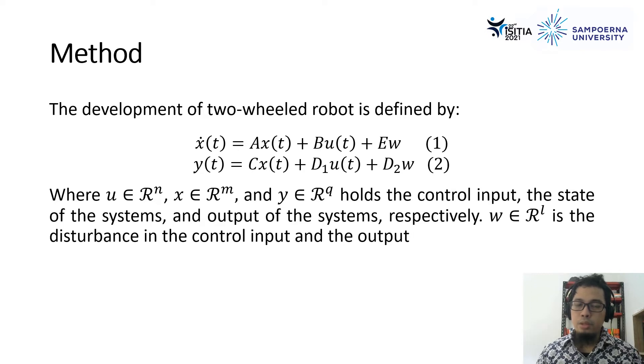we need to define the mathematical model of two-wheeled mobile robots, which is represented by equations one and equations two. Here, we introduce U as the element of R^n and X, R^m and Y is in R^q, holds the control input definitions, the state of the systems, and the output of the system respectively.